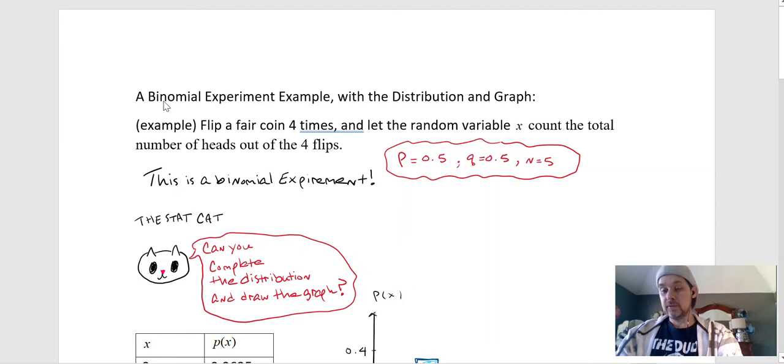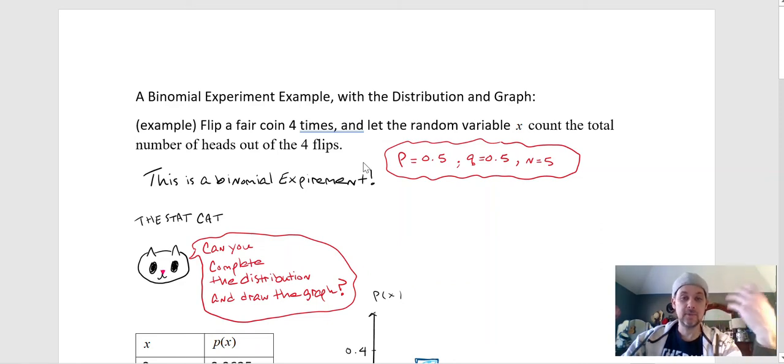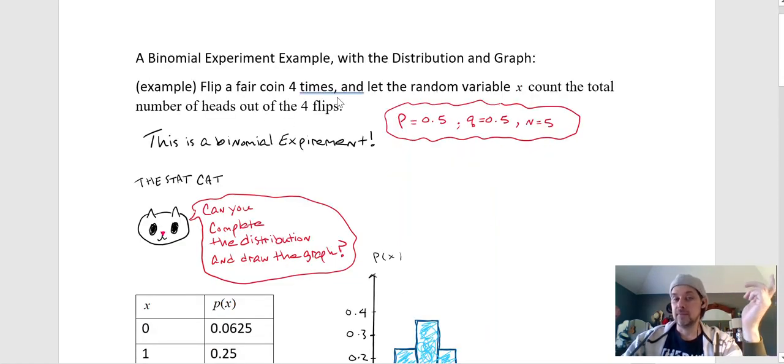For the binomial distribution and binomial experiments, here's an example that I hope can sum up everything we've done up to this point. Suppose we flip a fair coin four times. Now that itself is a binomial experiment if we let our random variable count the total number of heads out of the four flips.